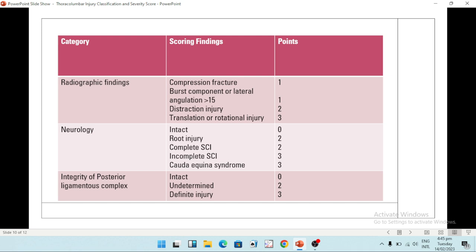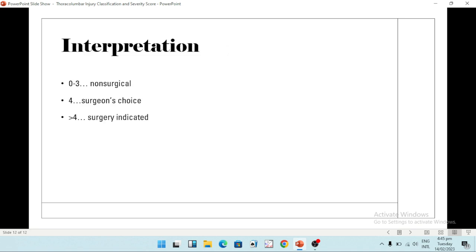So in the end, when you are left with the total points, you have seen a patient, examined him, gotten an x-ray or CT or MRI, whichever one you like, and you've checked their neurology, you get points. If it is between zero and three, then mostly the patient will be managed conservatively. If it is four, then it is the surgeon's choice. And if it is greater than four, then surgery is indicated.